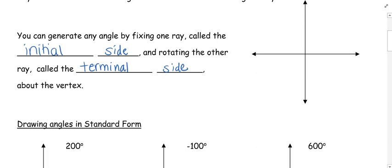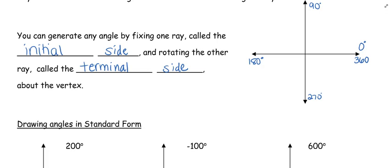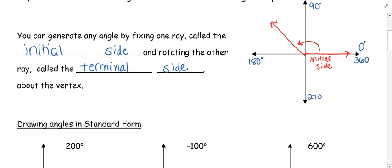We're going to rotate it around the vertex. Looking at our grid, we're going to start at 0 degrees and go to 90 degrees. We know around our circle: 270, 360. The initial side is always going to be at zero, and you rotate that around the vertex. Where that ray stops is called the terminal side. The distance from where you started to where you ended is your angle measure.